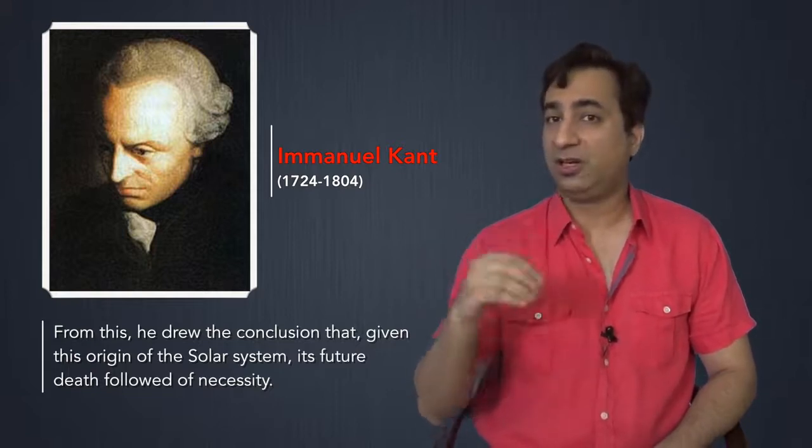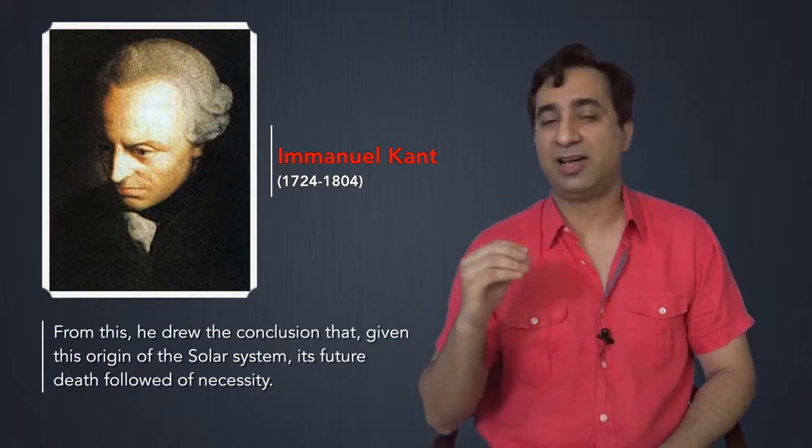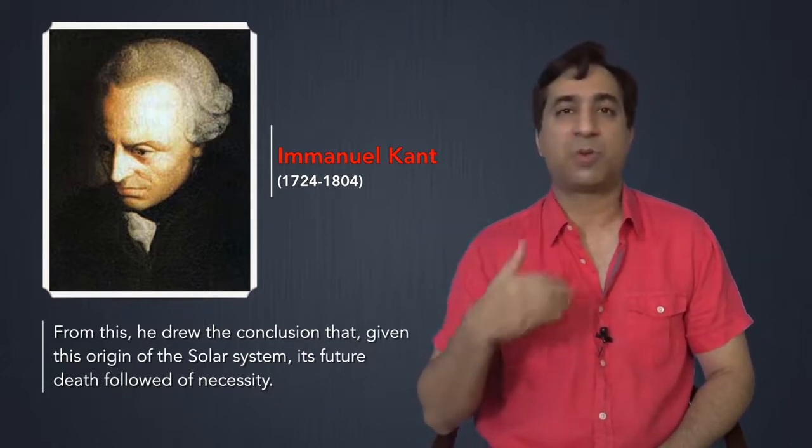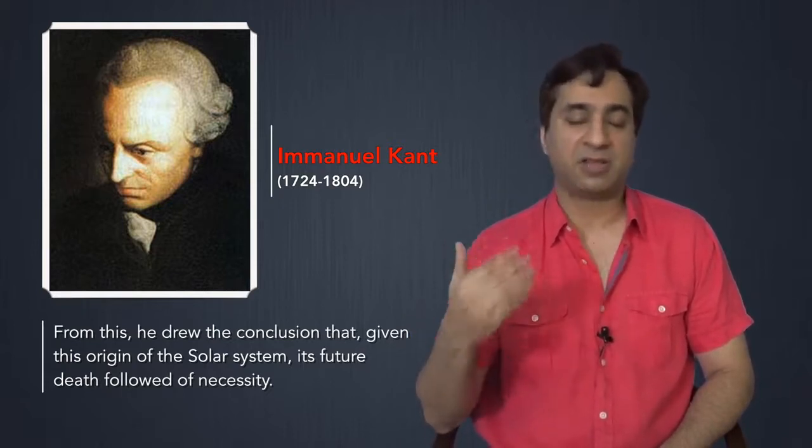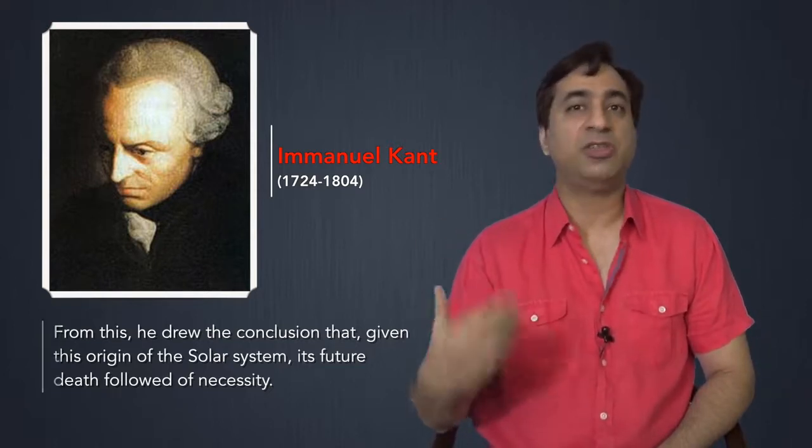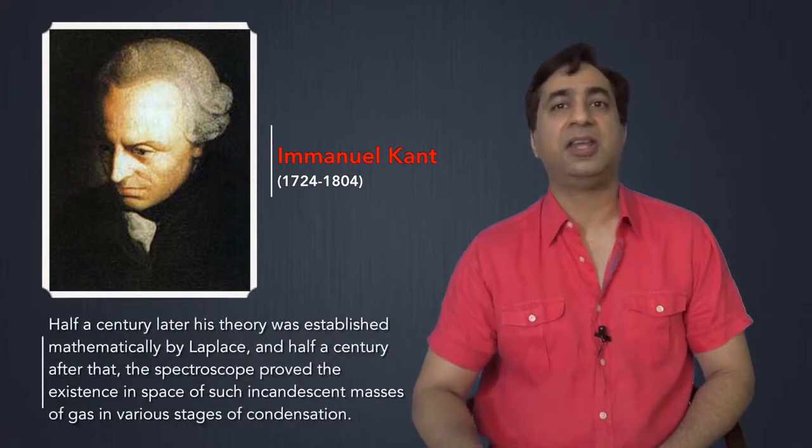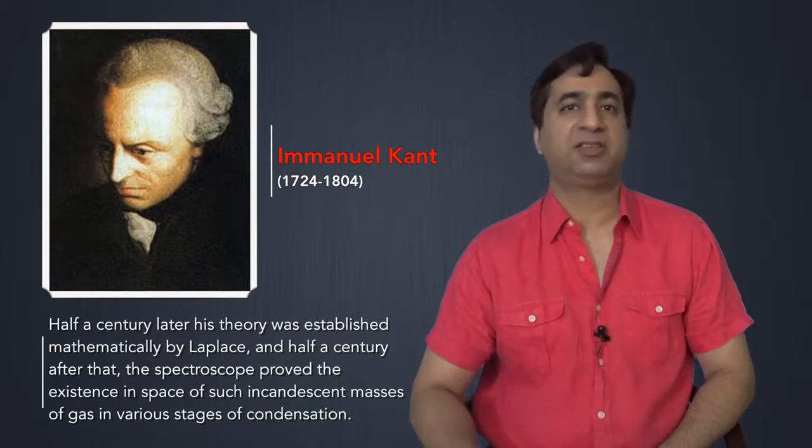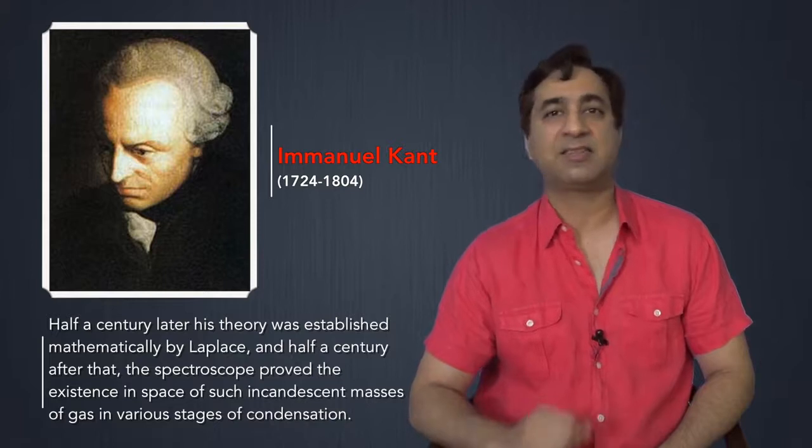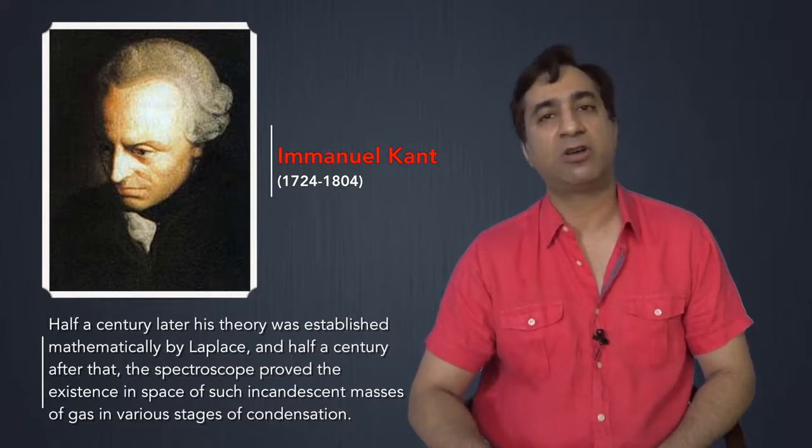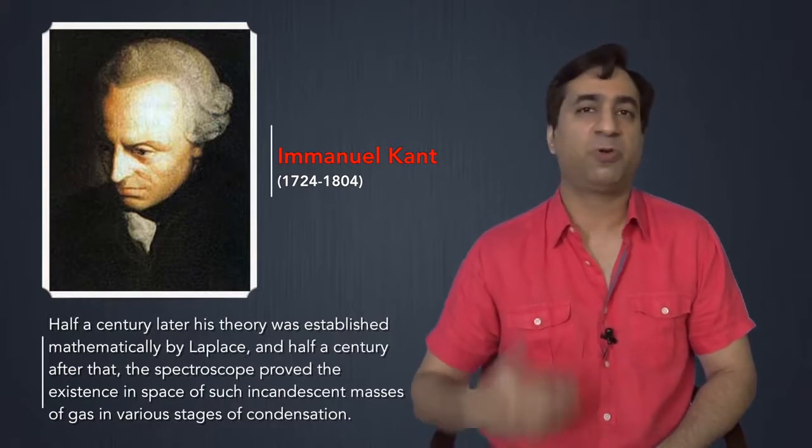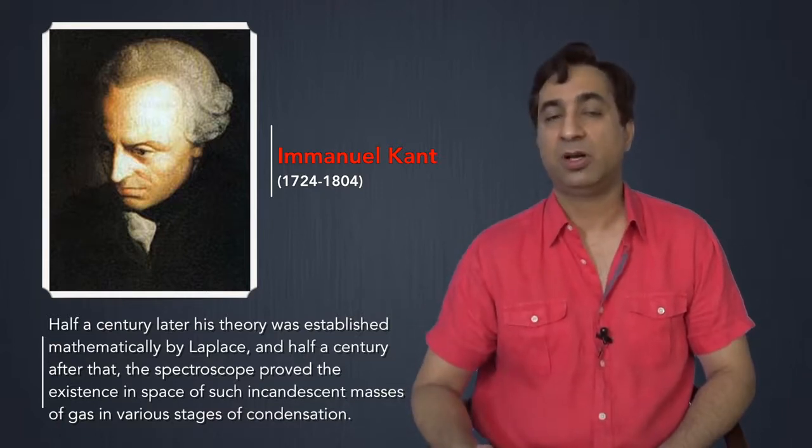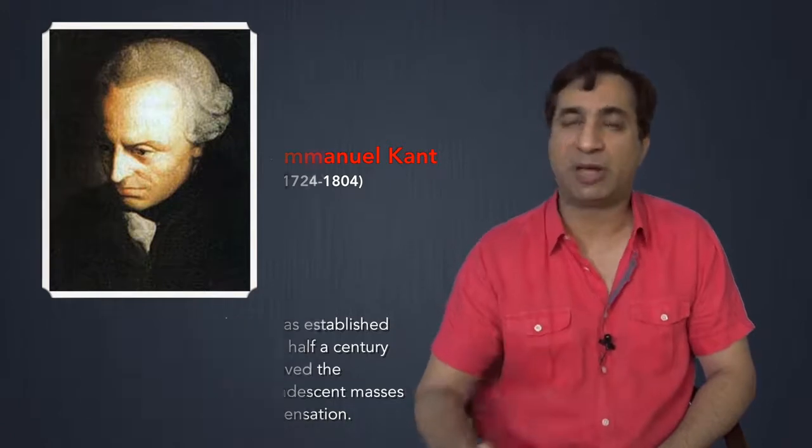So ancient man thought that stars existed from infinity and would continue to exist from for infinity. But Immanuel Kant, though he didn't have scientific evidence at the time, pointed out that all of the celestial objects were made of the same matter that this earth is made of. And by extension of that logic, they also underwent the same kind of evolutionary process that we see in this world. Half a century later, his theory was established mathematically by Laplace. And half a century after that, the spectroscope proved the existence in space of such incandescent masses of gas in various stages of condensation.